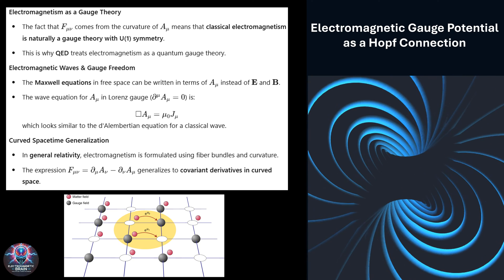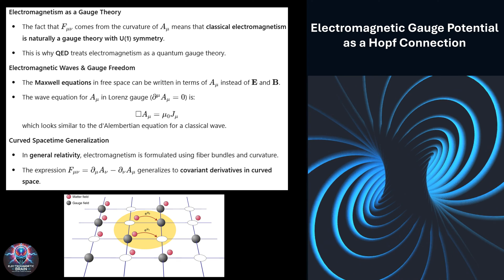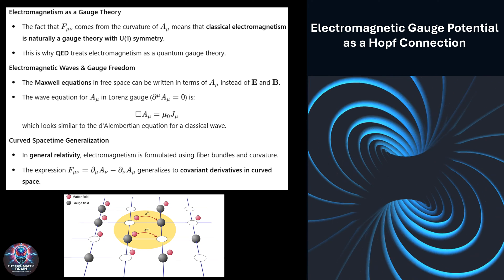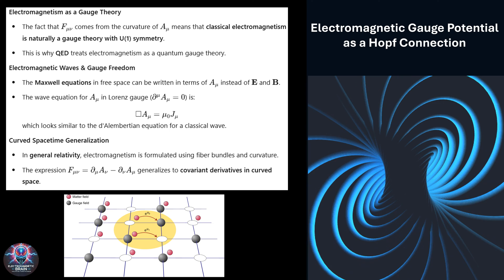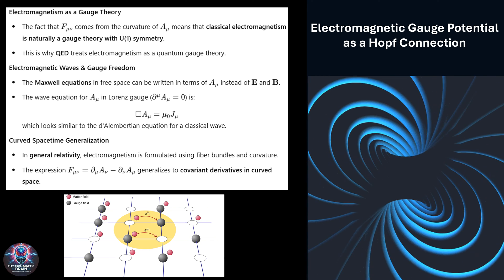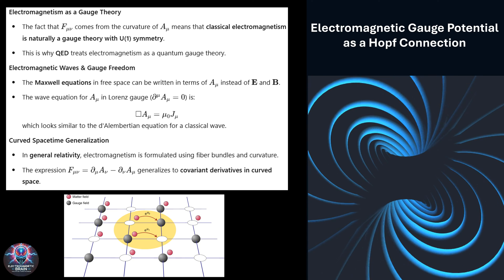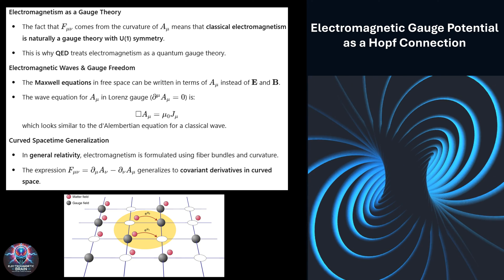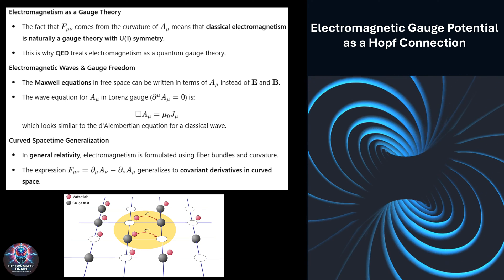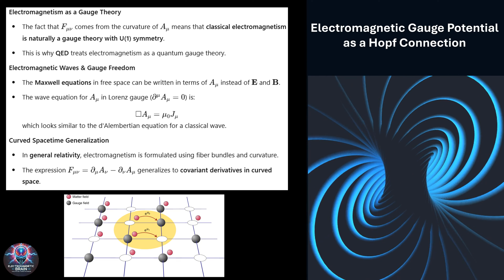So, why does all of this matter? Because it shows us that electromagnetism isn't just a force, it's a fundamental geometric phenomenon, woven into the very fabric of space and time. By seeing the electromagnetic gauge potential as a Hopf connection, we unlock a deeper unity between topology, gauge symmetry, and the structure of the universe itself.